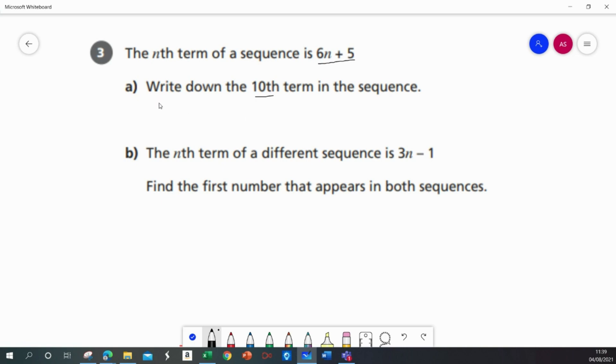So this is where n, the term number, would be 10. So I'm going to substitute in 10 into 6n plus 5. That gives us 6 multiplied by 10 plus 5, which is 60 plus 5. And so the 10th term in the sequence will be 65.